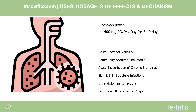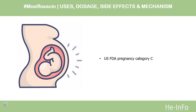Intraabdominal infections (complicated): 400 mg PO once daily for 5–14 days. Pneumonic and septicemic plague: indicated in adults for the treatment of plague, including pneumonic and septicemic plague caused by susceptible isolates of Yersinia pestis. Also indicated for prophylaxis of plague: 400 mg PO once daily for 10–14 days; begin administration as soon as possible after suspected or confirmed exposure. Pregnancy Category C: an increased incidence of smaller fetuses was observed at 100 mg/kg/day. Since there are no adequate and well-controlled studies in pregnant women, moxifloxacin ophthalmic solution should be used during pregnancy only if the potential benefit justifies the potential risk to the fetus.